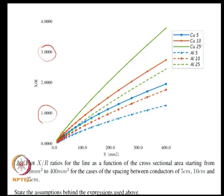The X/R ratio is higher when spacing between conductors is large — for 25 cm spacing you have a higher X/R compared to 5 cm spacing. If you increase the distance between conductors you have more inductance, which is naturally expected. If you want very low inductance you want to bring the conductors closer together and put in a small twist so the wires stay close by, reducing the enclosed area for the flux.